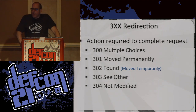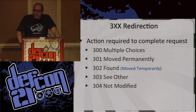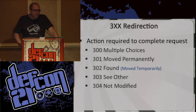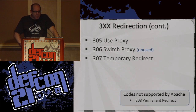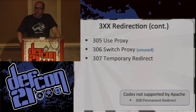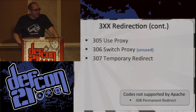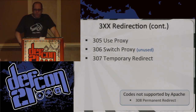You get the 300 redirection stuff. Most people know what a 301 and 302 are. 304 not modified is something you see quite a lot if you're looking at data flow. You also get some weird stuff that isn't used anymore like switch proxy. Use proxy is also interesting — if you return a proxy setting in the location header it says you should use this proxy for your communications. I'm sure no one would use that for malicious purposes in any way.